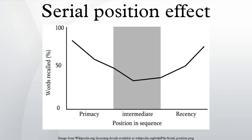Serial position effect is the tendency of a person to recall the first and last items in a series best, and the middle items worst. The term was coined by Hermann Ebbinghaus through studies he performed on himself, and refers to the finding that recall accuracy varies as a function of an item's position within a study list.